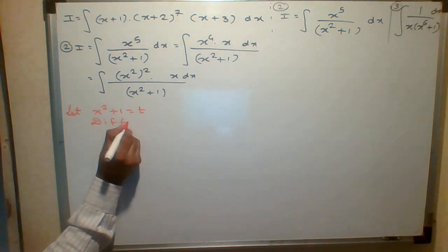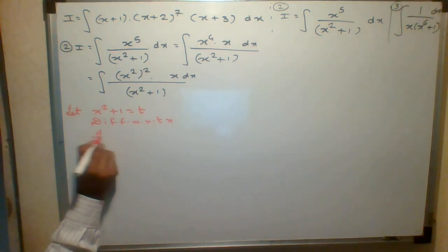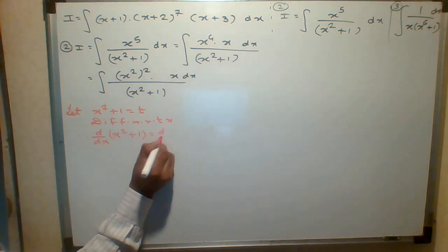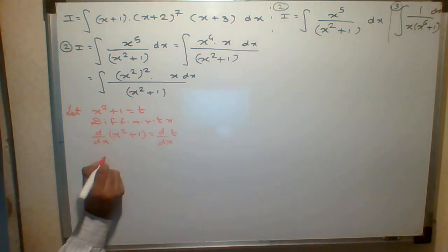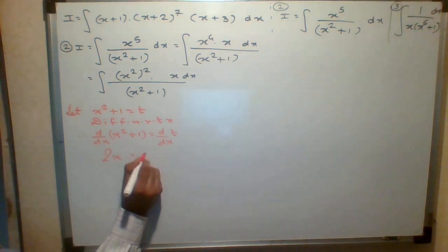Differentiate with respect to x. If I differentiate, we know that the derivative of x squared plus 1: dt by dx equals what? What is the derivative of x squared? That is 2x. The derivative of 1 is 0.